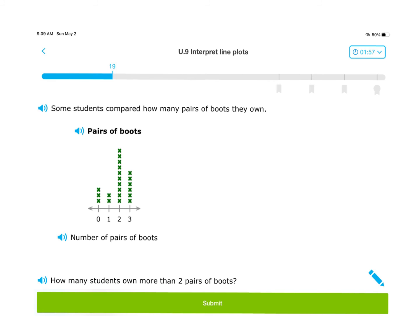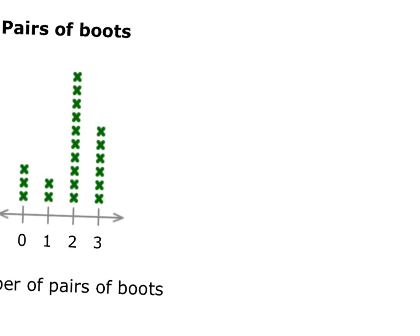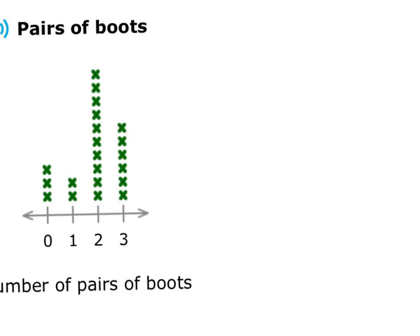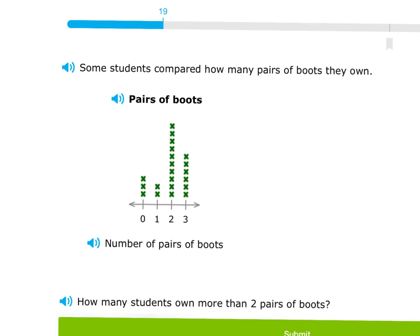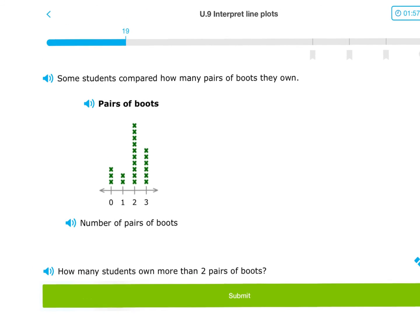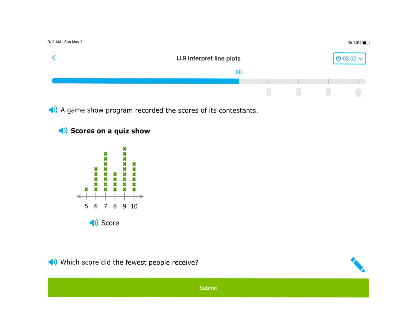So you would have to count just the X's on the three column of the x-axis. Counting: one, two, three, four, five, six. So six people own three or more pairs of boots.